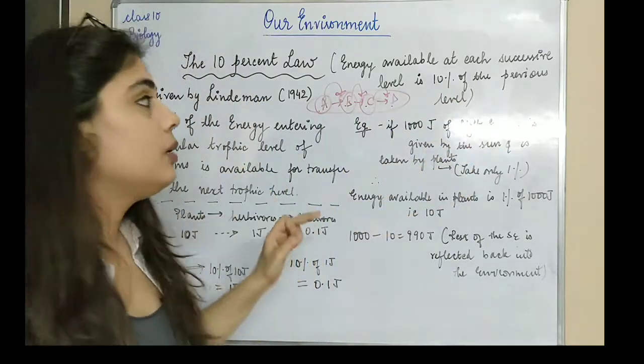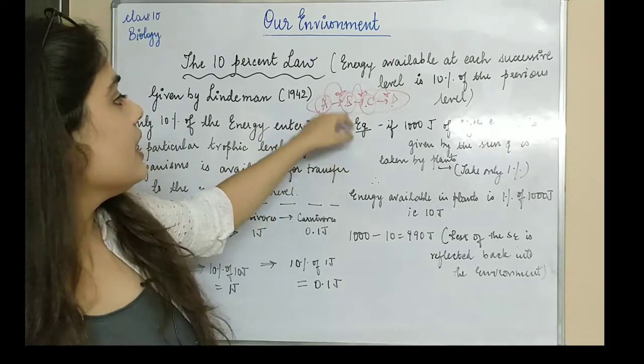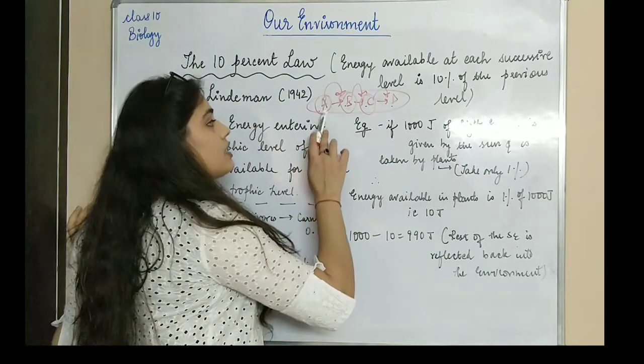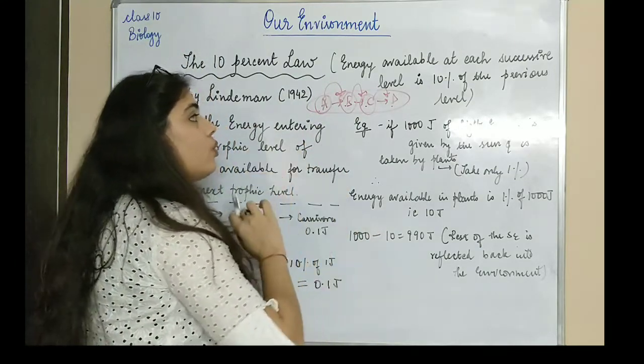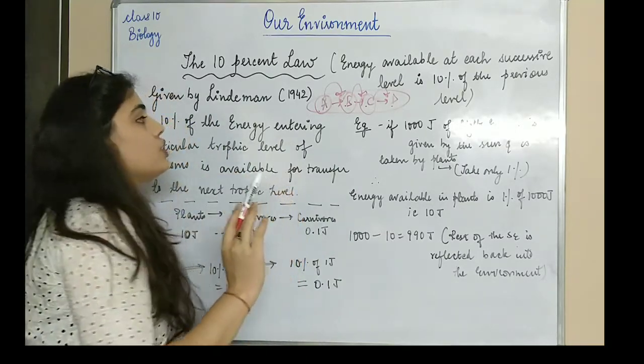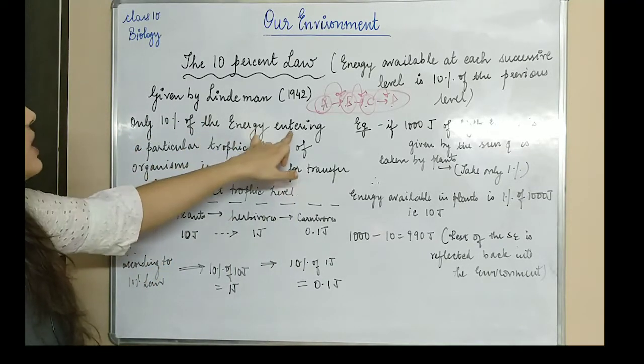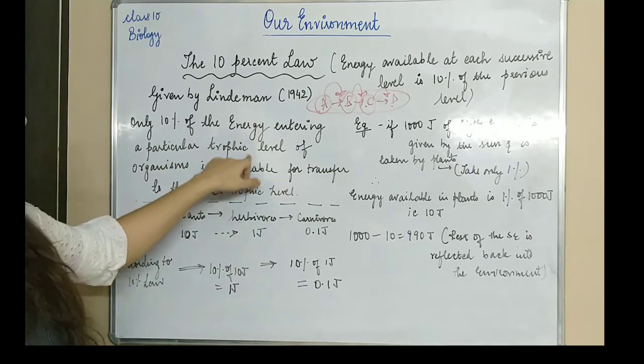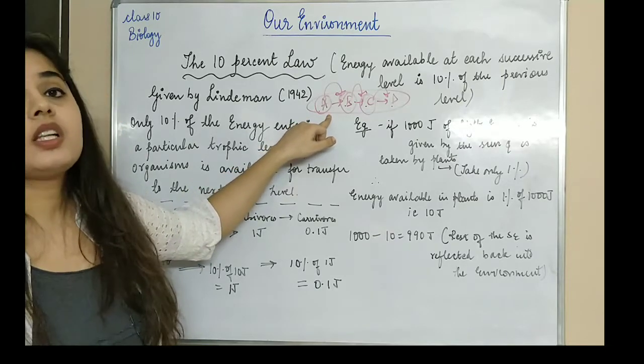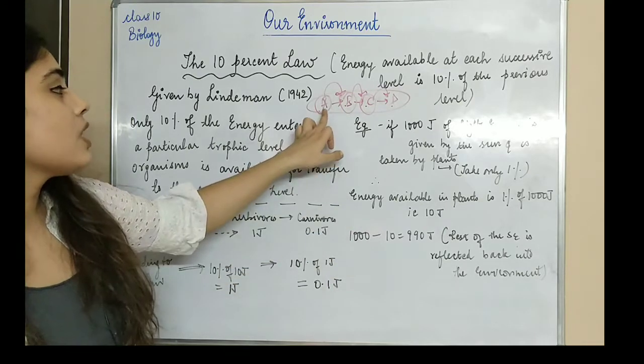What happens is only 10% of the energy is available to the organism in the successive level. For example, if there's a lot of energy here, then the energy that transfers from here will only be 10% of that energy. The 10% energy law states that only 10% of the energy entering a particular trophic level is available for transfer. Please see the previous videos if you haven't, because trophic levels and how energy is being transferred is explained very clearly.